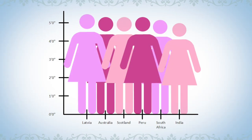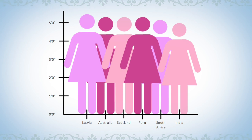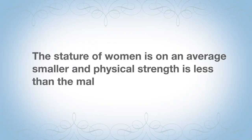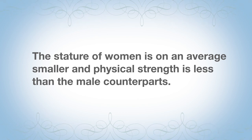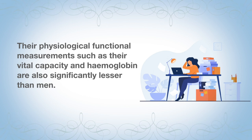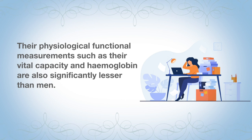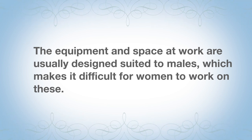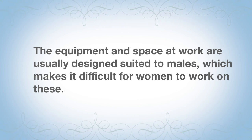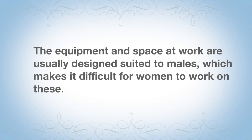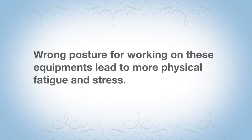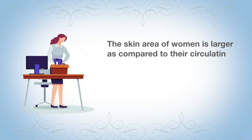Now let us look at specific occupational health hazards and risks faced by women. The stature of women — in many developing countries including India, the average height of a woman would be between 5 and 5.3 feet, which is smaller on average and with lesser physical strength compared to male counterparts. Physiological measurements such as vital capacity and hemoglobin are also significantly lesser in women. Equipment and workspaces are designed to suit men, making it difficult for shorter women to handle instruments. The wrong posture — leaning forward or reaching for heights — can lead to physical fatigue and stress among women workers.